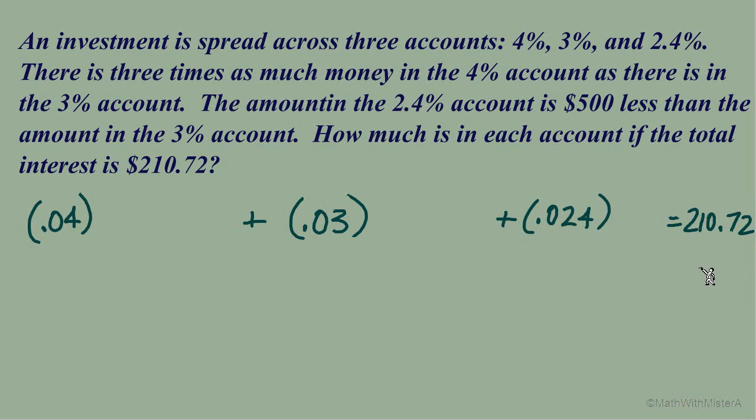Now the information about the amount of dollars in each account, the principal, we've got two sentences. Three times as much money in the 4% account as there is in the 3% account. I'm still taking my habit of whichever quantity shows up last in the sentence is what I will use for the variable x. So x is the amount in the 3% account. And now translating, we see there's three times as much in the 4% account. So 3 times x in 4%. Now our next sentence, the amount in the 2.4% account is $500 less than the amount in the 3% account. Again, 3% account, we are using the variable x. So the amount at the 2.4% is $500 less. So however much was going in the 3% account, $500 less in 2.4%. So x minus 500.